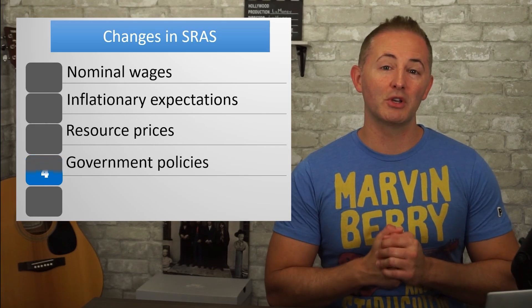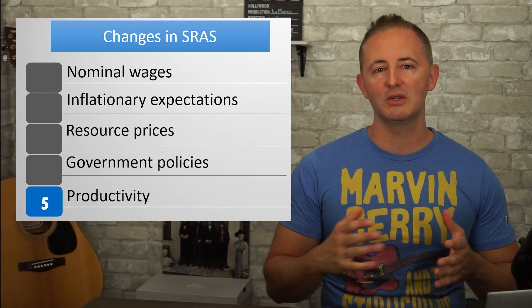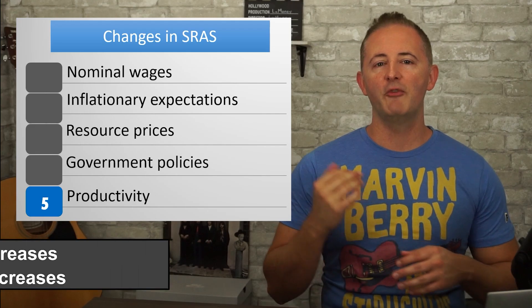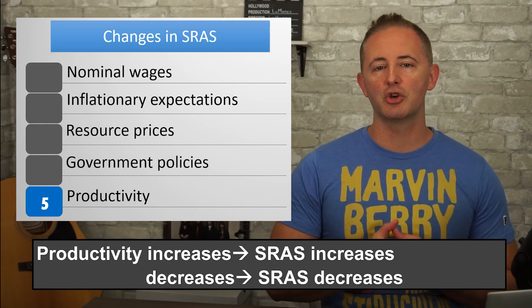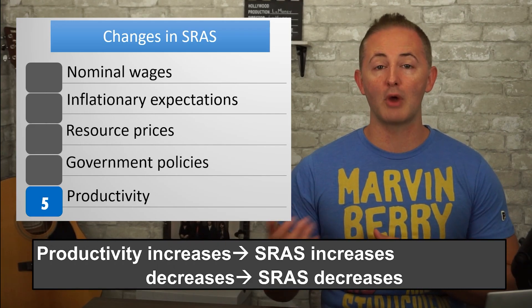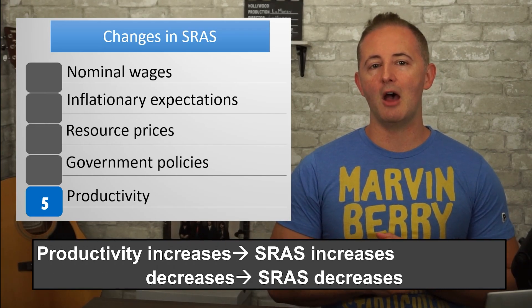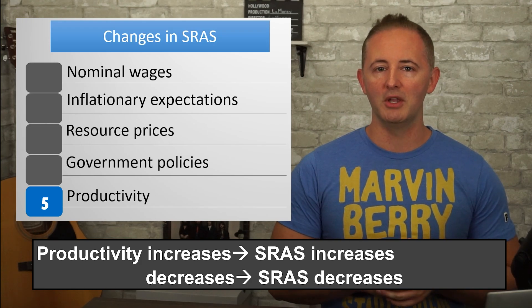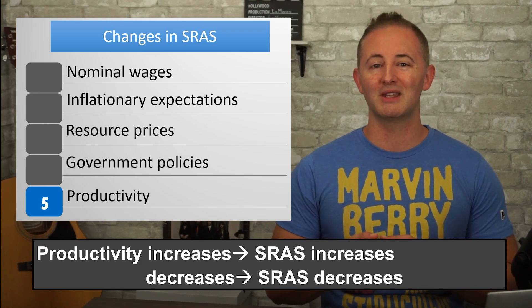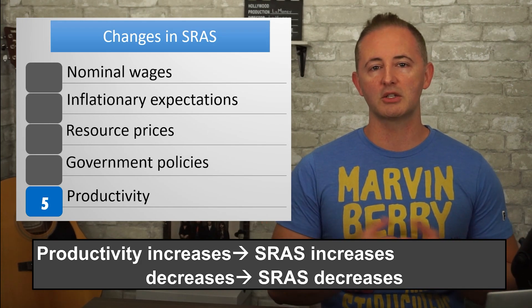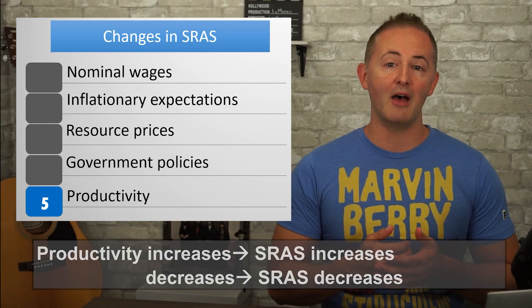Lastly, changes in productivity and technology can also affect the SRAS curve. If productivity increases, the SRAS curve would shift right, since now more can be produced using the same inputs. Or if productivity decreases, the SRAS curve shifts to the left.